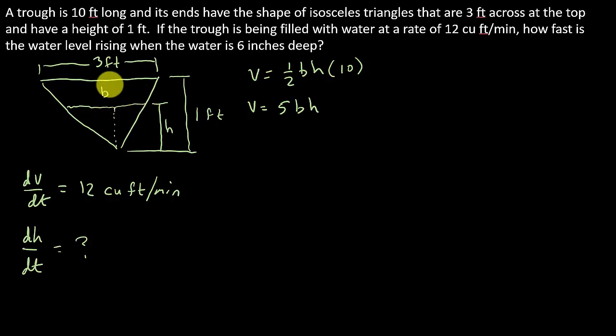We've got similar triangles here. Well, we can say 3 over 1, so this base over this height is equal to this base over this height. And we're solving for b, and so that tells us that b = 3h. All right, so we can go and plug that in.